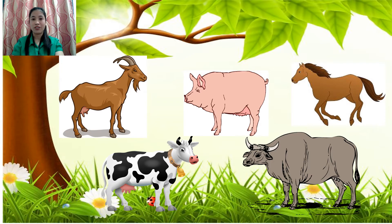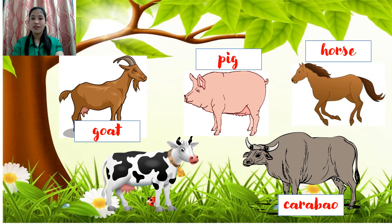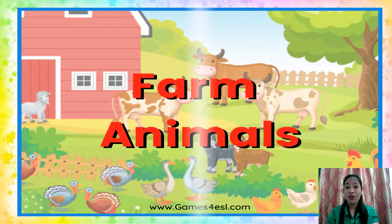Take a look at the picture. What are the animals that you can see? We have goat, pig, horse, carabao, and a cow. How about in this picture? We have a chicken and a duck. Where do you commonly see those animals? Right in the farm. They are farm animals, also considered production animals used for milk, cheese, leather, wool, and many more. Some farm animals help the farmers to work on the field.